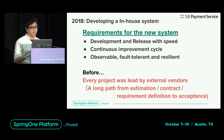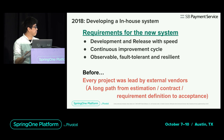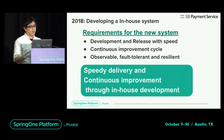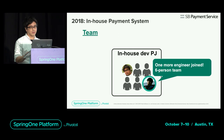Until now, all projects were outsourced to a development vendor. It was a very long journey from estimation, contracts, and requirement definition to acceptance. Relying on development vendors made it impossible to deliver incrementally and quickly in the agile way. I wanted to achieve speedy delivery and continuous improvement through in-house development. When the in-house development project started, Kimura joined and we became a team of six people.